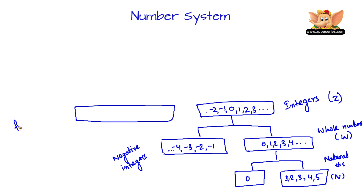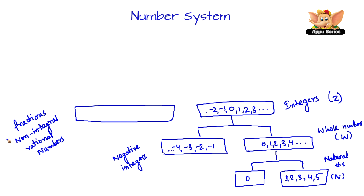Now fractions are also called as non-integral rationals or non-integral rational numbers. For example: 3 by 2, 11 by 19, minus 1 by 2, and minus 2 by 3. These are all called as non-integral rational numbers.